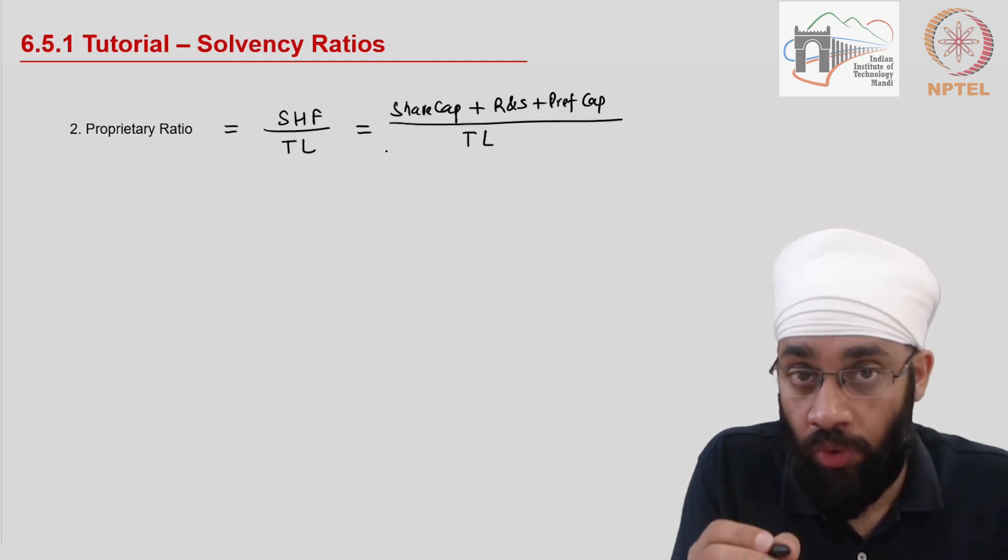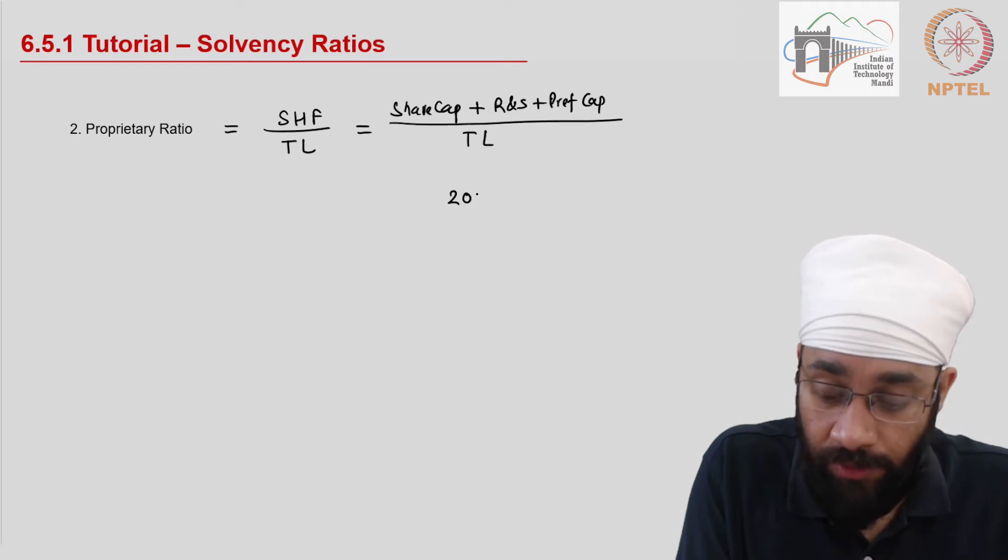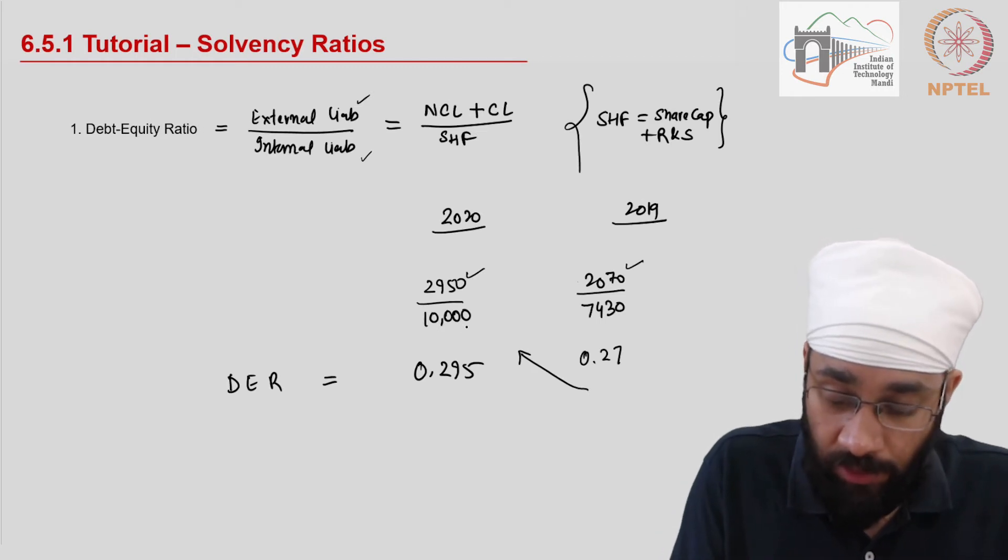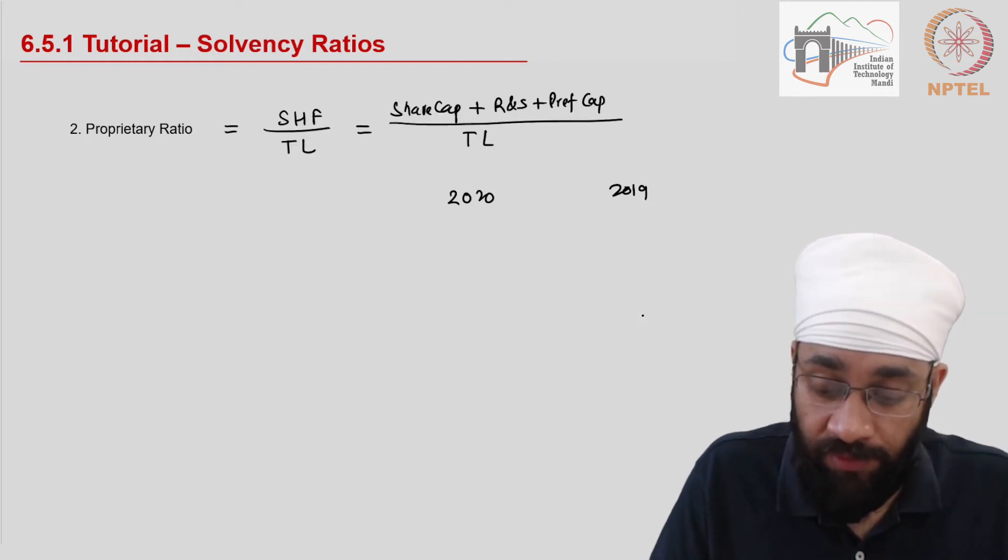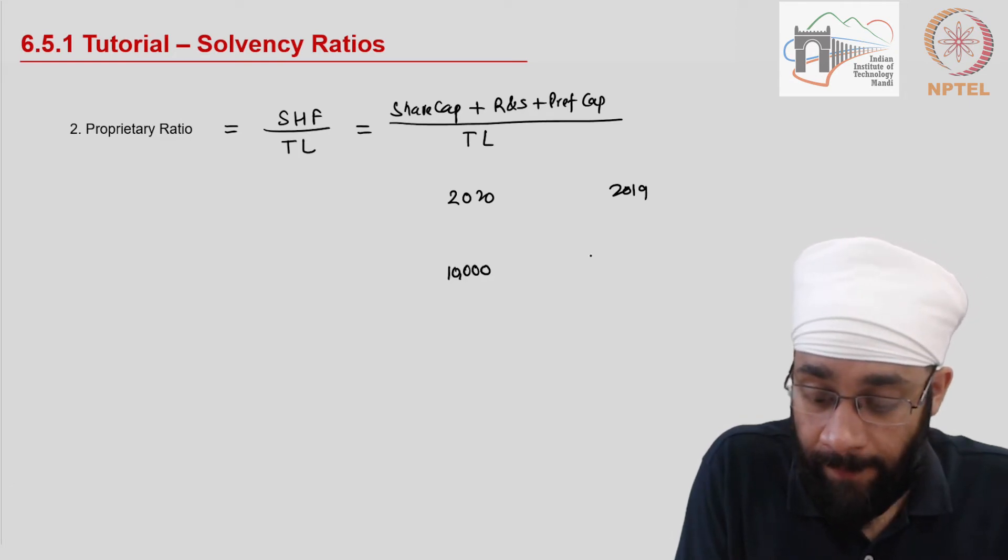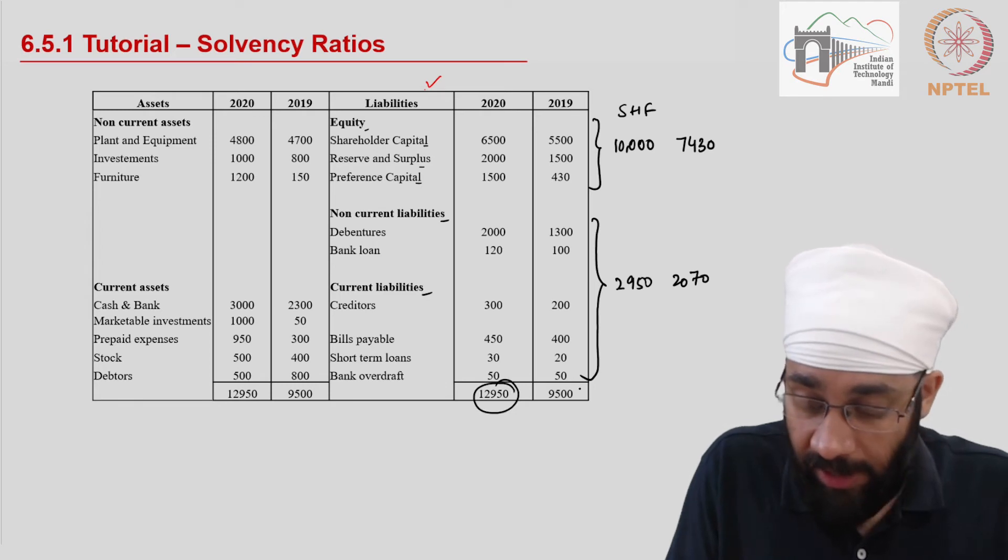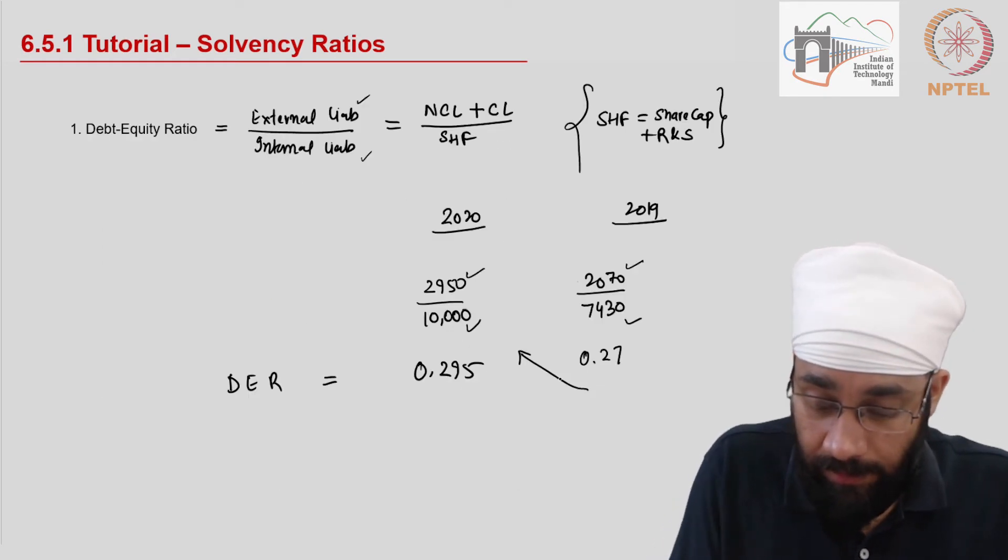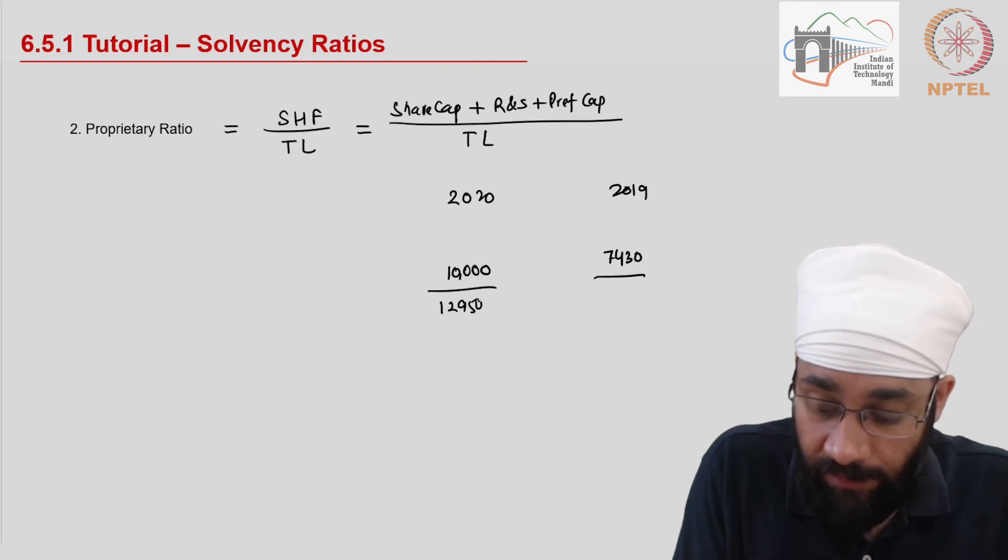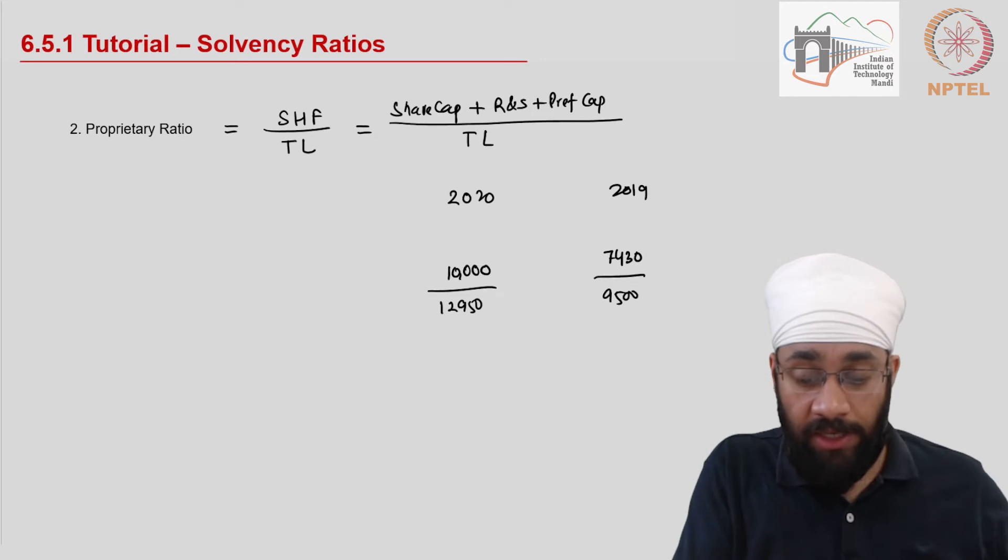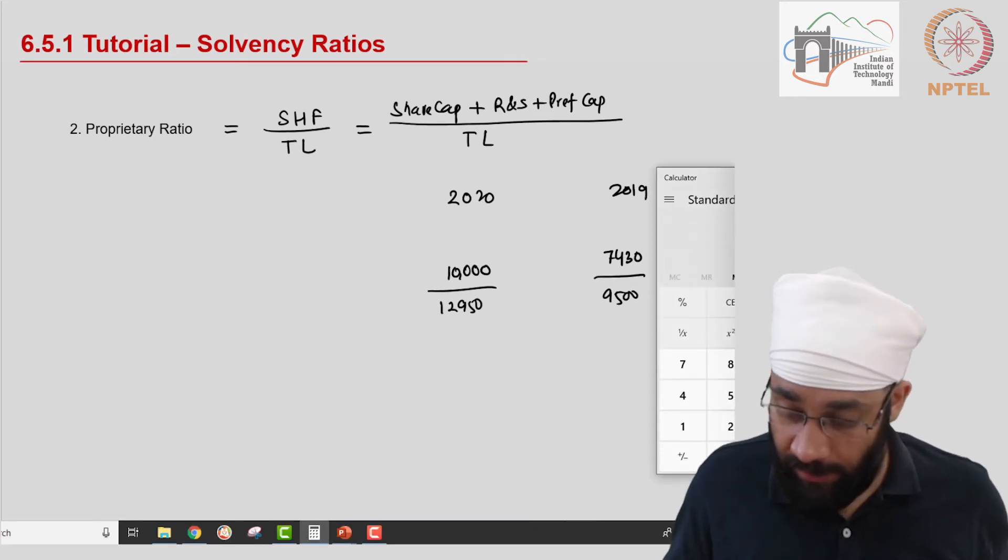We have already calculated shareholder funds in the previous ratio. So 2020 and 2019 shareholder funds is 10000 and 7430. We need to just divide this by the total liabilities. Now we just need to do the calculations and let me get the calculator here.